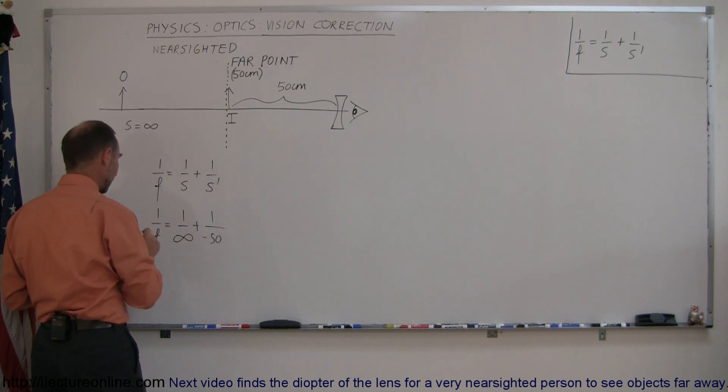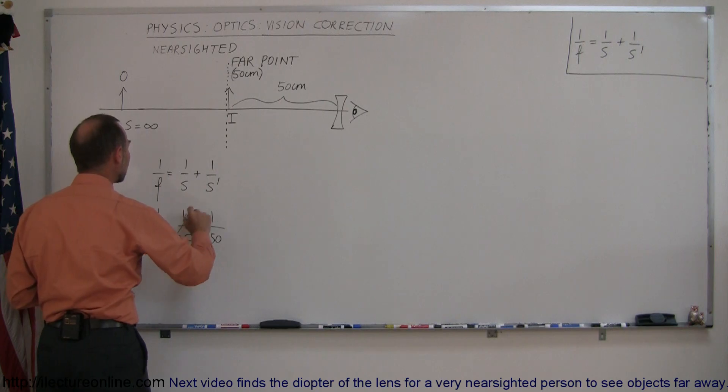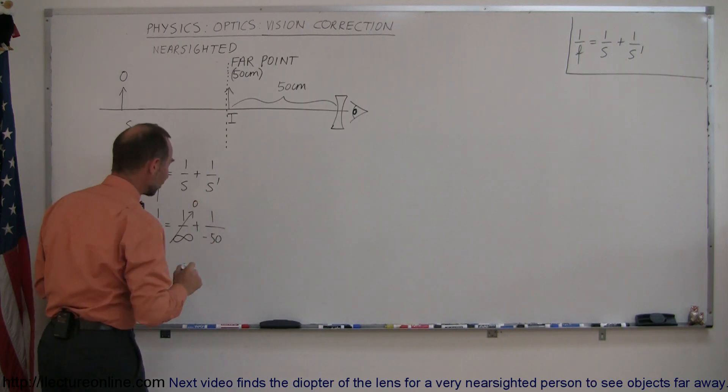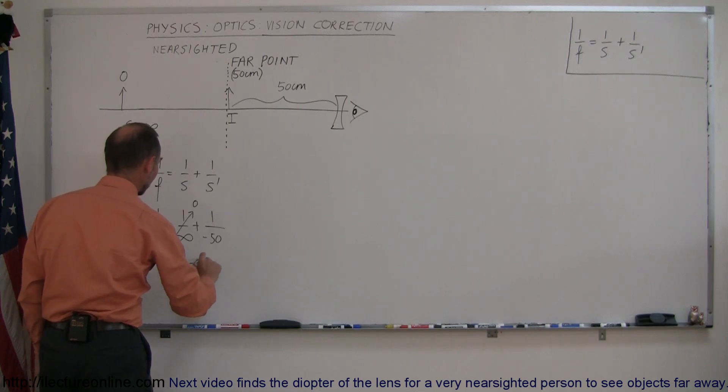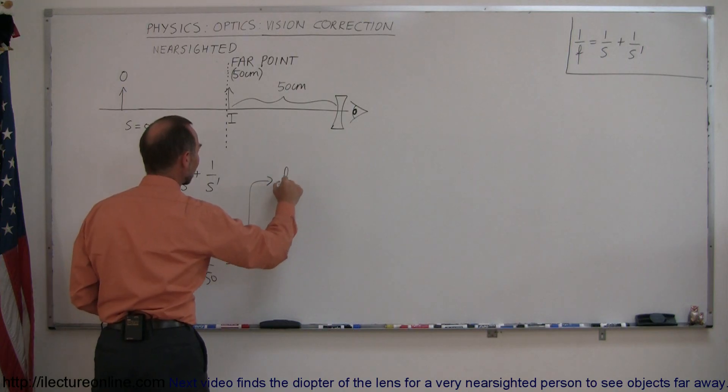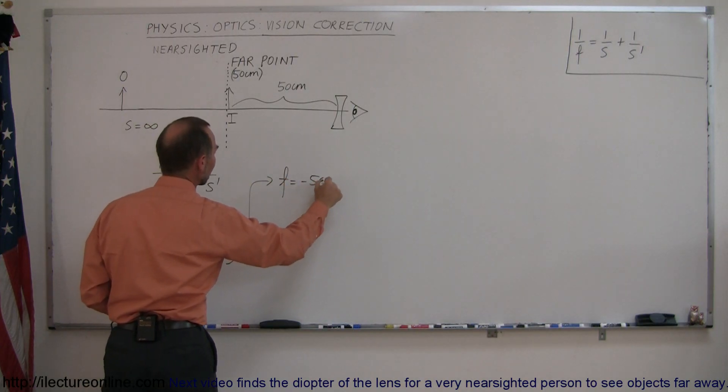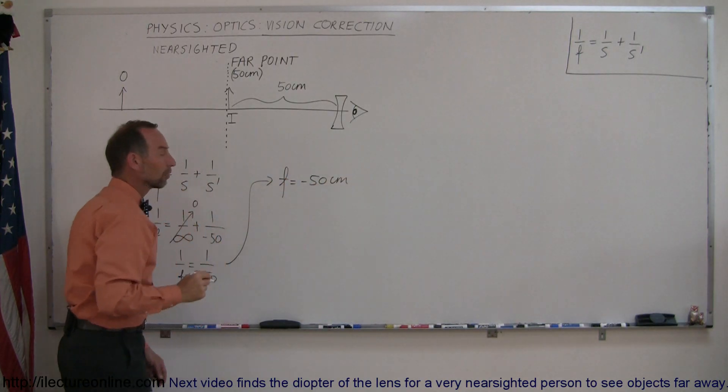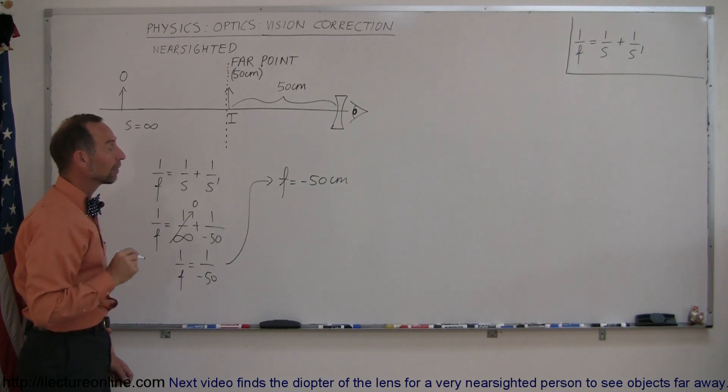All right, now calculating f: 1 over infinity is of course zero because anything divided by infinity is zero. So that means that 1 over f then becomes 1 over minus 50, and of course then we turn the equation around and we can see that f is equal to minus 50 centimeters. So that must be the focal length of the lens.